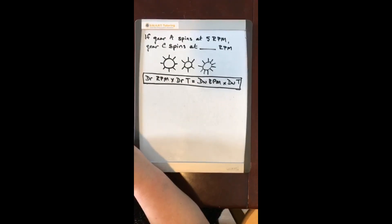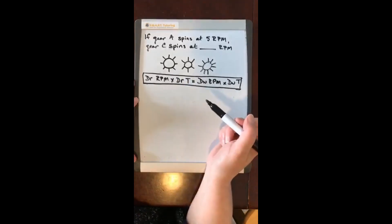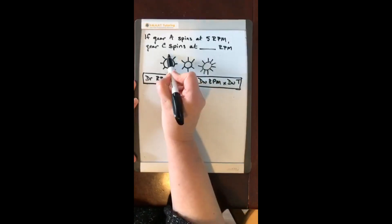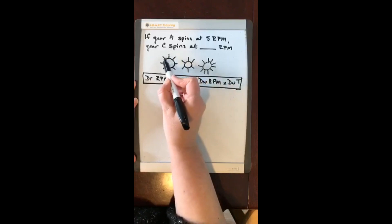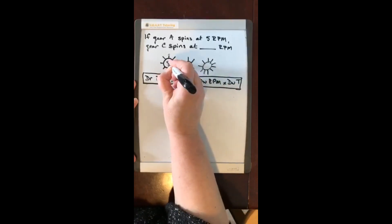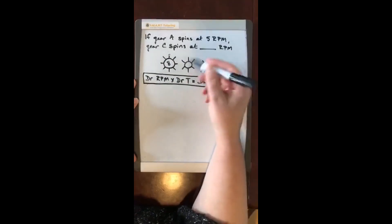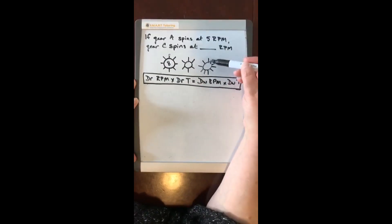The first thing you want to do is count your teeth. In your test you're usually forced to count them, otherwise they could be given to you, but in this case we have to count them. So we're going to start here and count around - gear A has 8 teeth. Leave the middle one, you don't need to worry about that, but you do have to count the end. Gear C has 10 teeth.